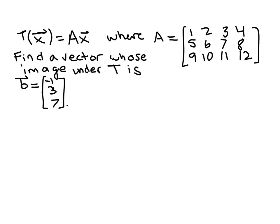In this example, we're told that the transformation T can be expressed as the multiplication matrix A times the vector X. And so we're supposed to find a vector whose image under this transformation is this given vector B. So what we're really being asked to do here is find a vector X such that the matrix A times X will generate this given vector B.